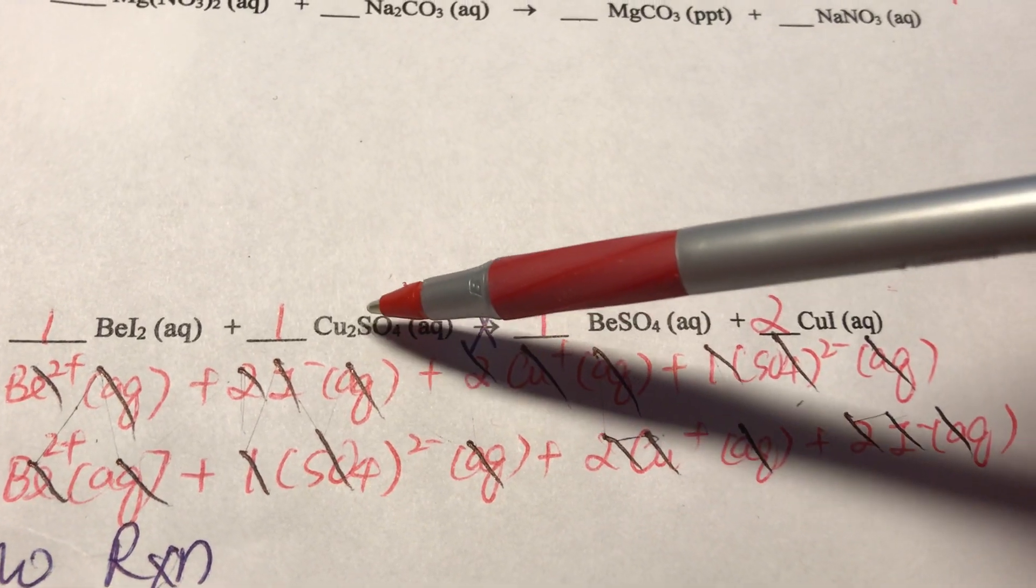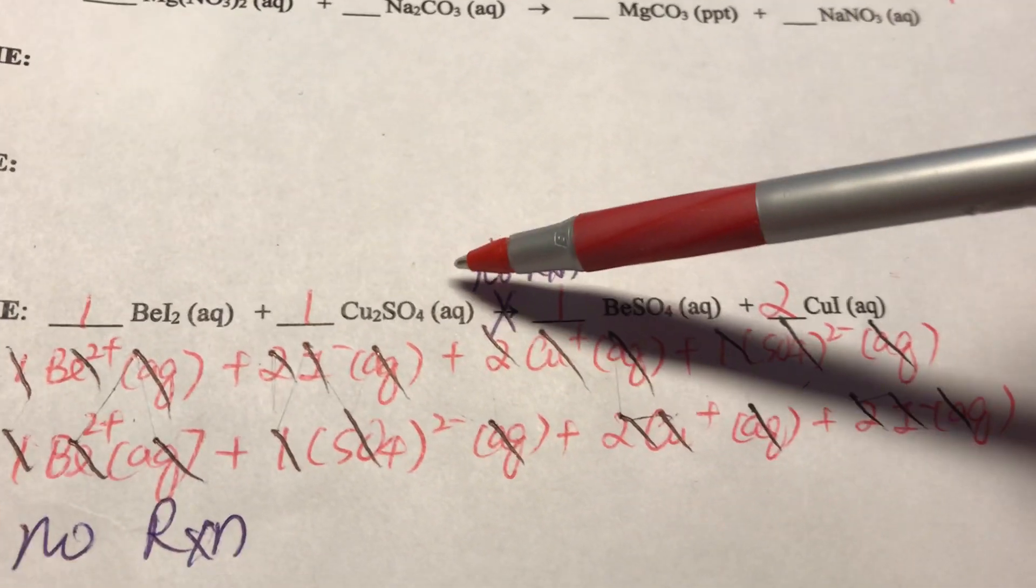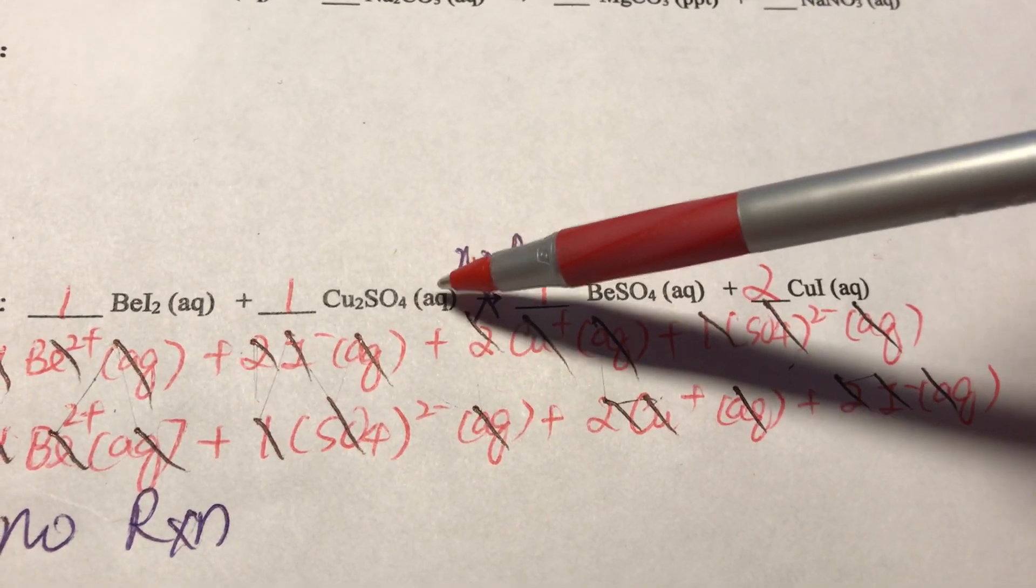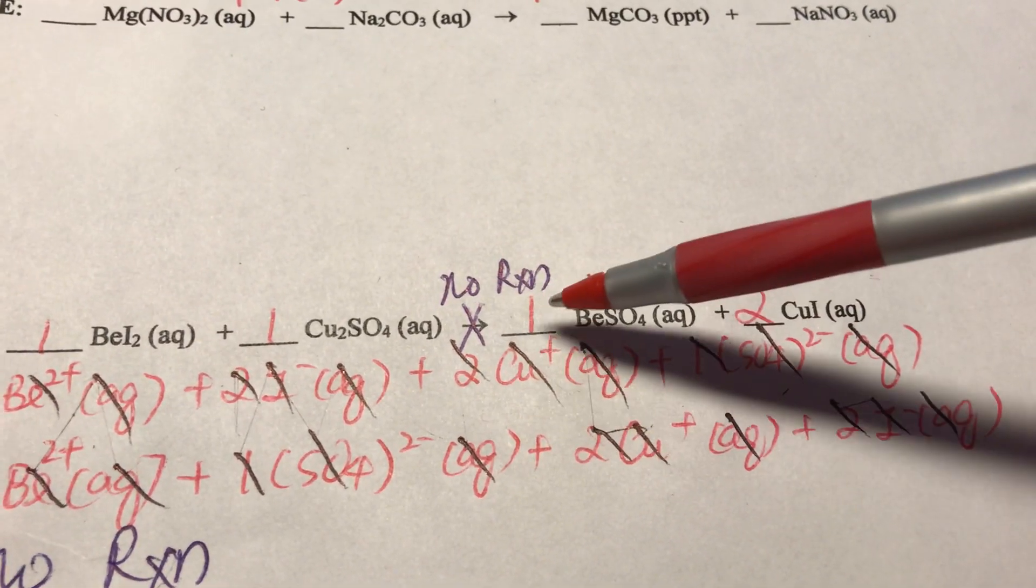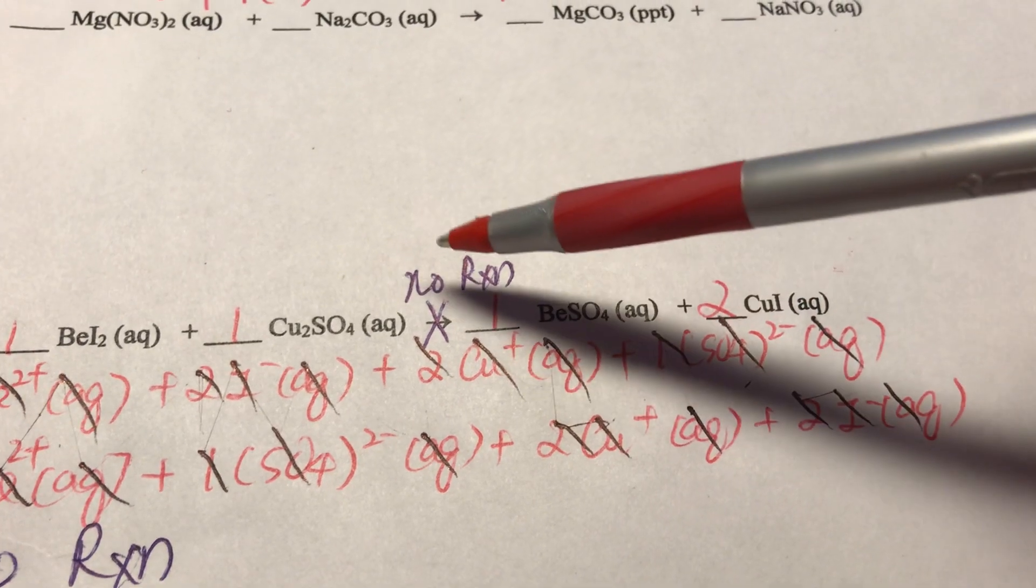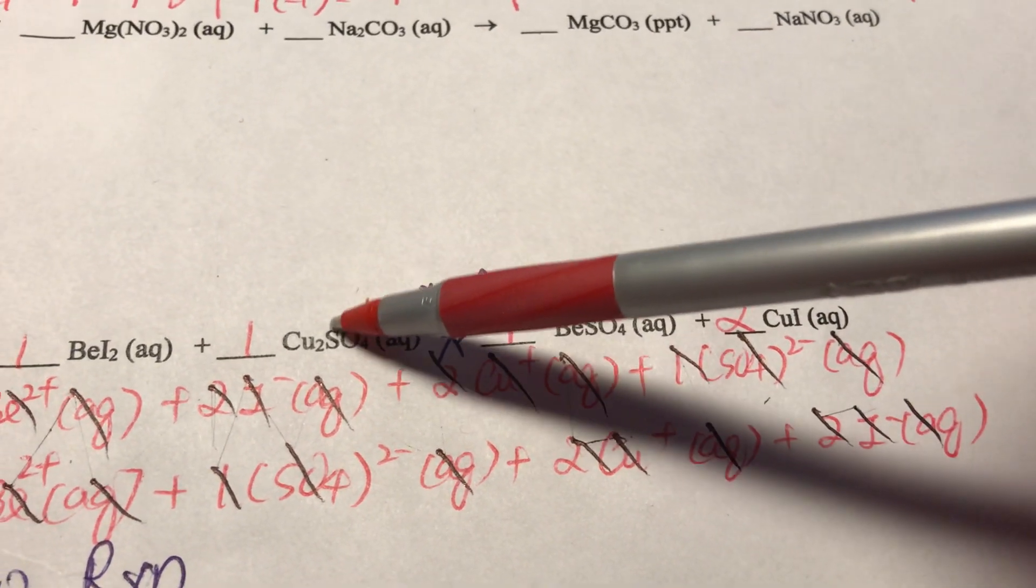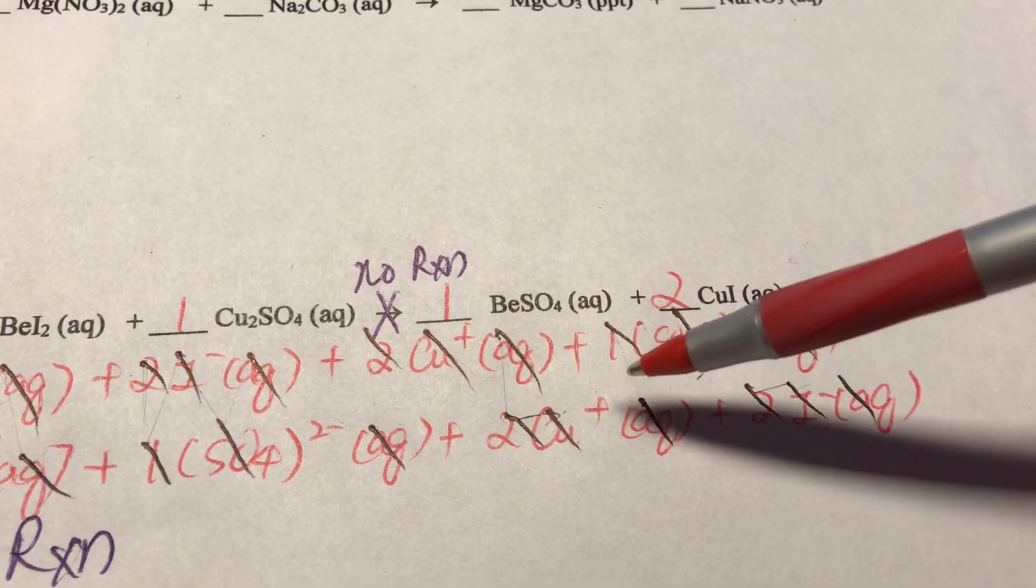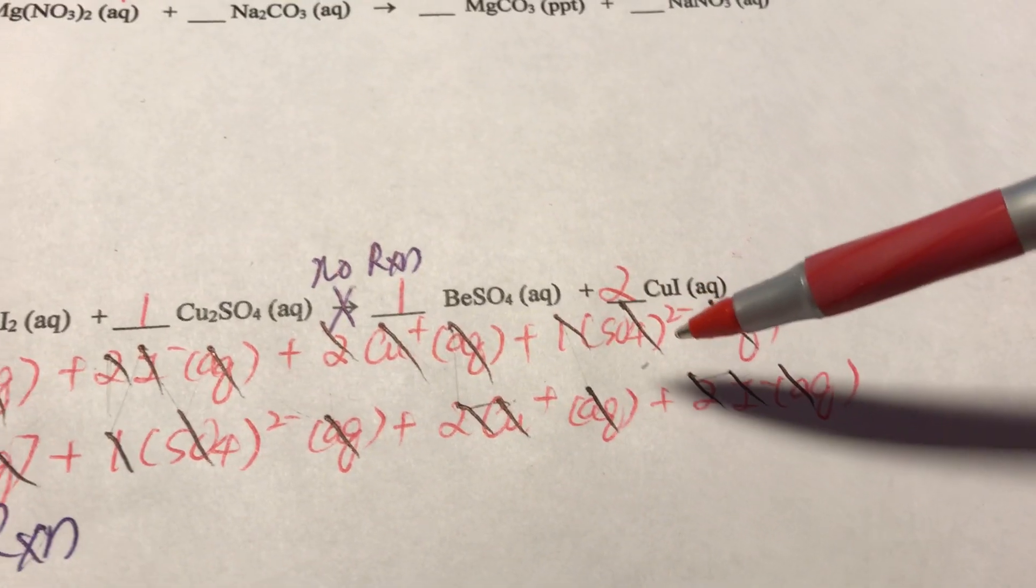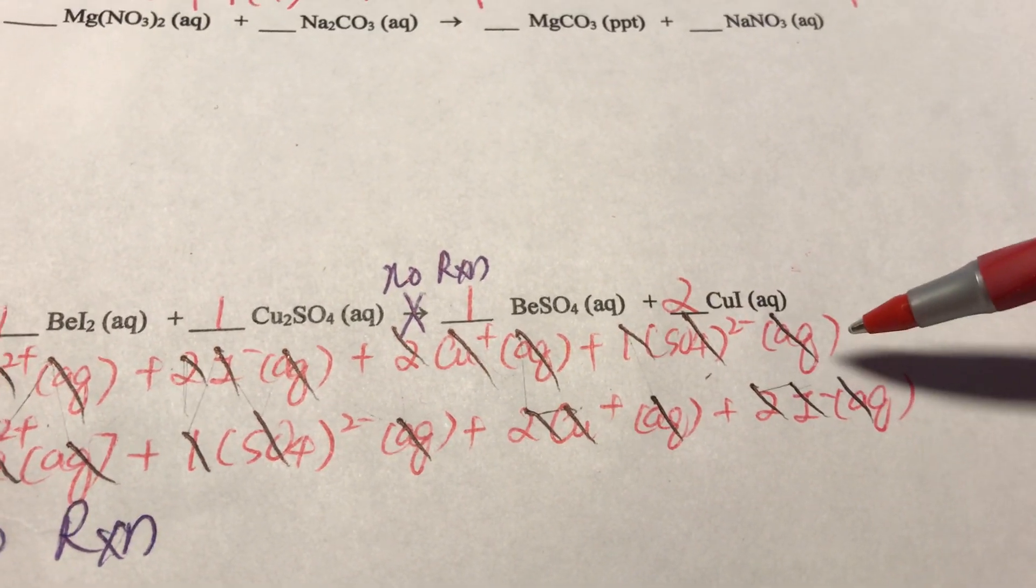Now be careful with the transition metal. You cross over, you always want to double check the charge when we have transition metal. My charge for Cu is +1 after crossover, and I get 2 Cu here, so I get 2Cu⁺(aq) plus 1(SO₄)²⁻(aq).